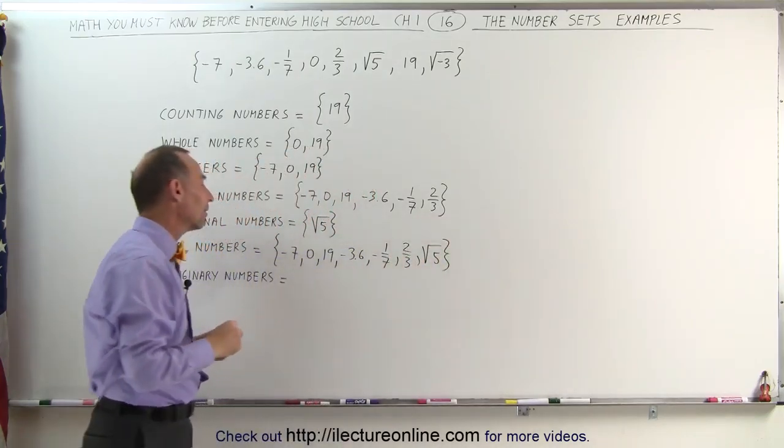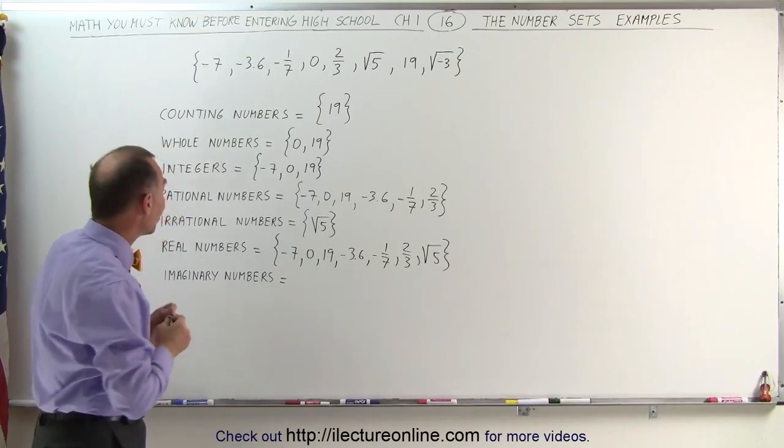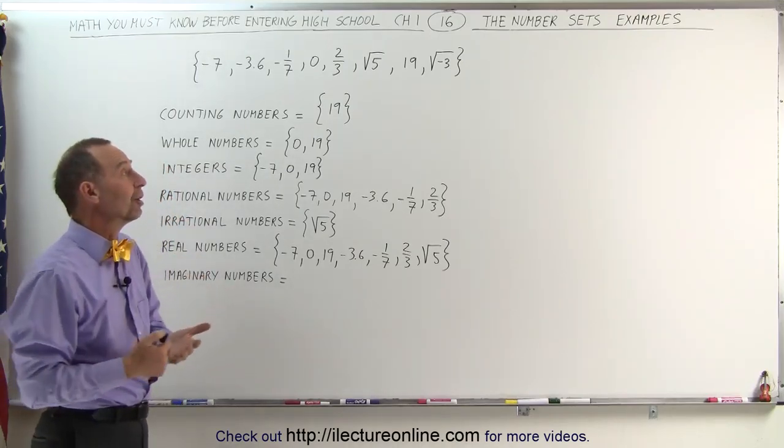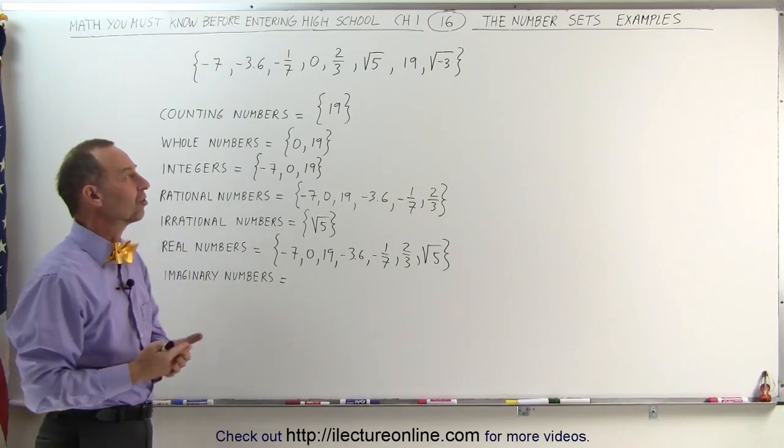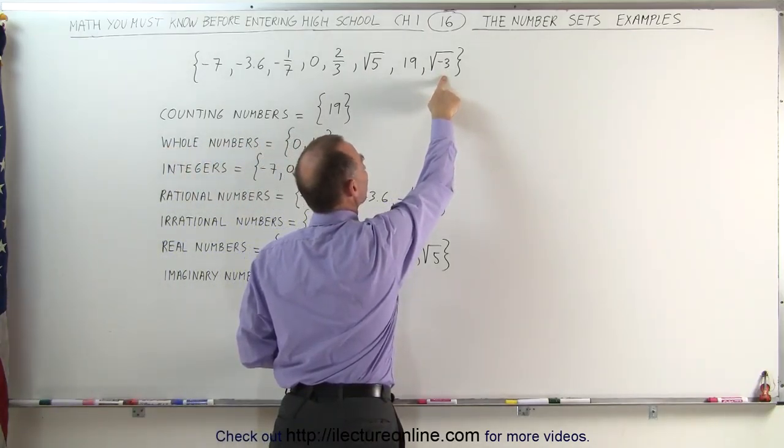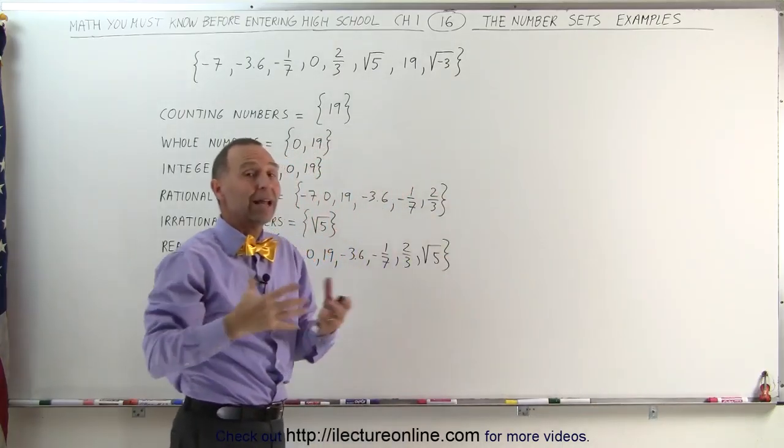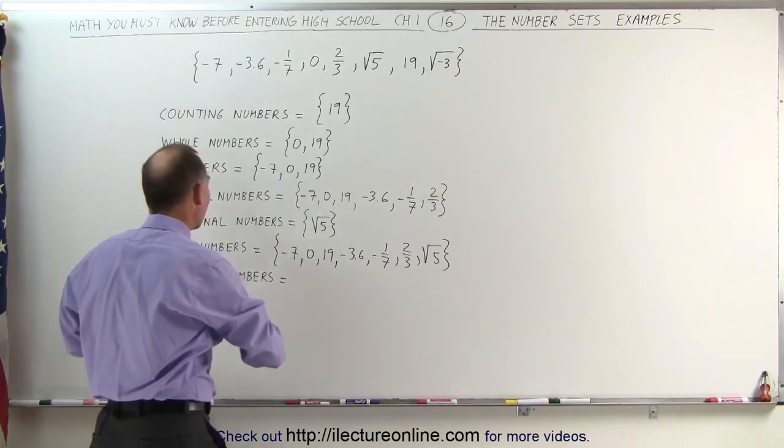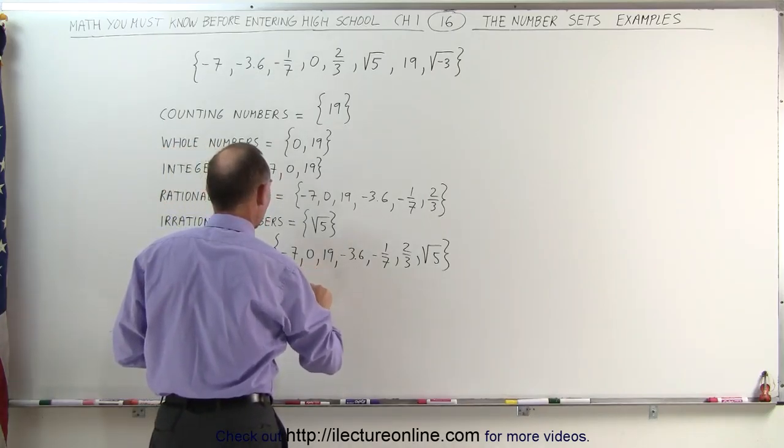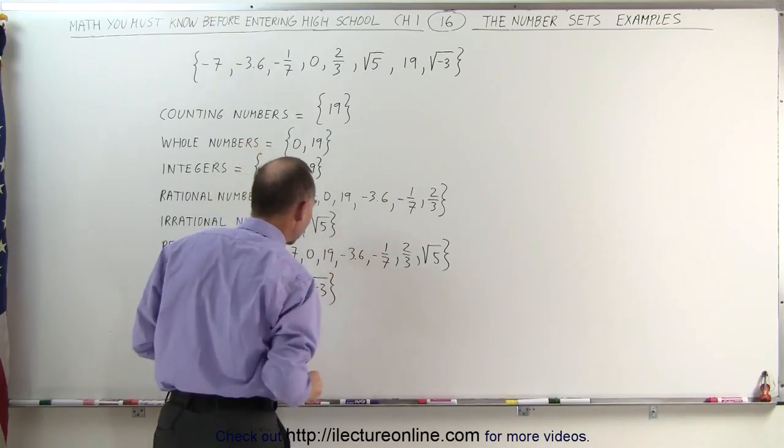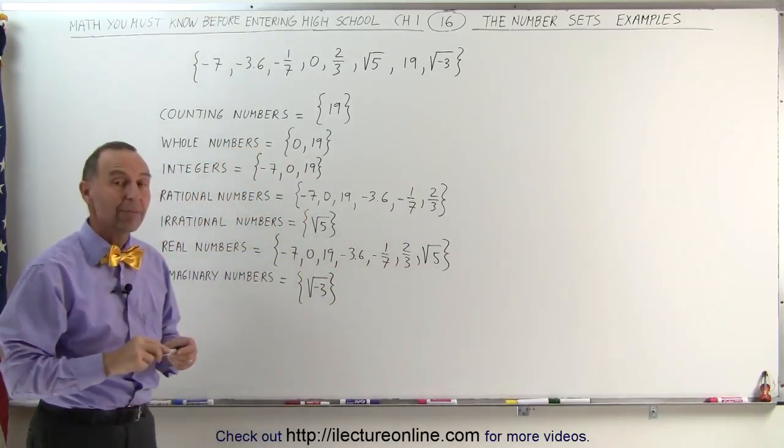That leaves us with one number there that we did not include with the real numbers. Therefore, it's not real. It's called an imaginary number because it doesn't really exist. We cannot find the square root of negative 3. If you try to point that out in your calculator, you'll get an error. It doesn't exist. It's not a real number. So we include that in the set of the imaginary numbers. The square root of a negative number does not exist, and therefore, that is called an imaginary number.